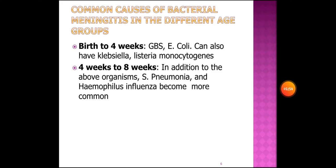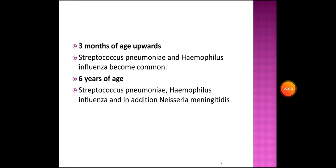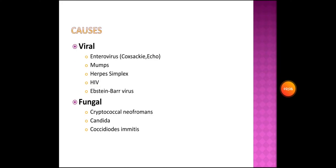Common causes of bacterial meningitis by age group: from birth to four weeks, Group B Streptococcus, E. coli, Klebsiella, and Listeria monocytogenes. From four to eight weeks, Streptococcus pneumoniae and Haemophilus influenzae become more common. From three months upward, Streptococcus pneumoniae and Haemophilus influenzae are common. From six years of age, Neisseria meningitidis is also added.